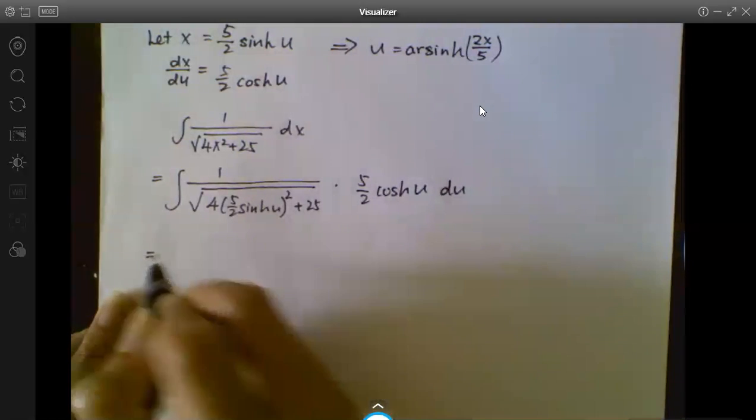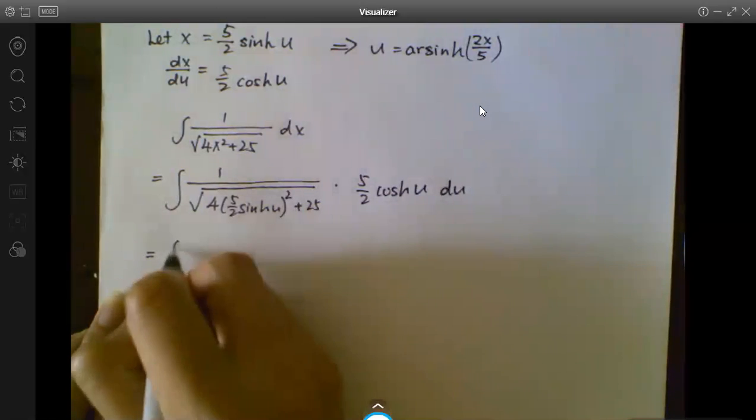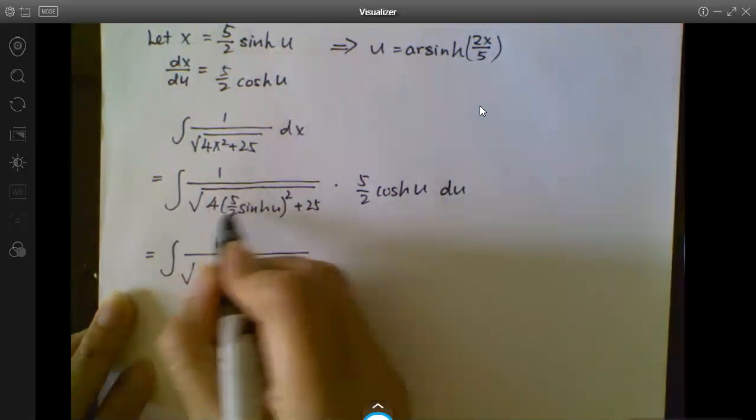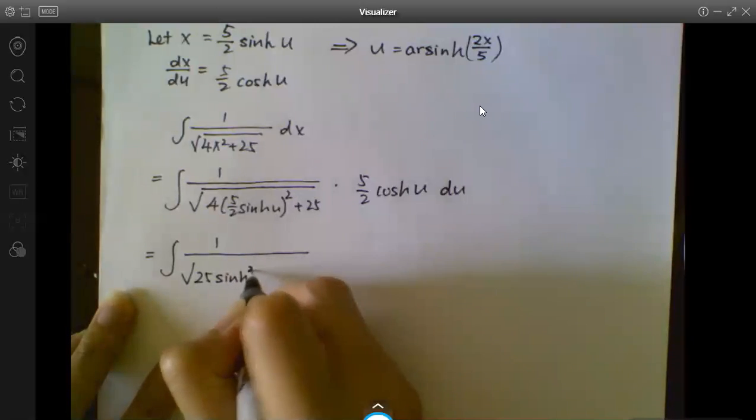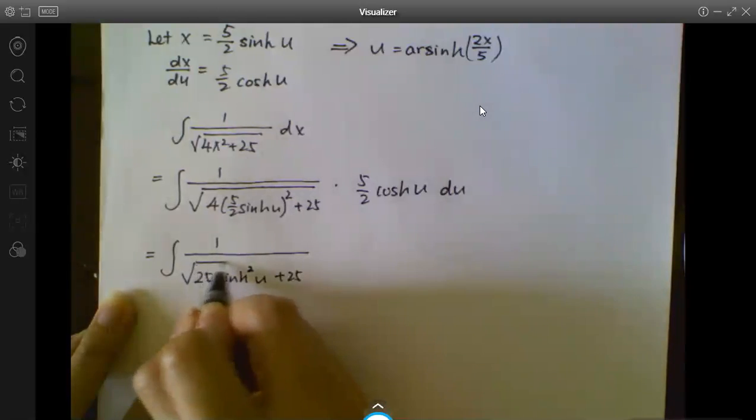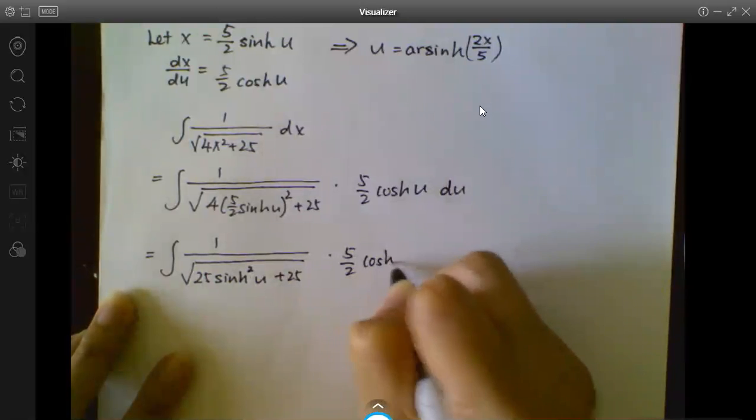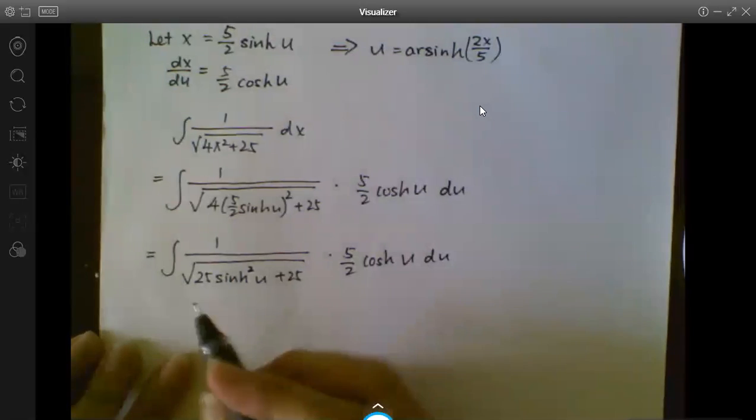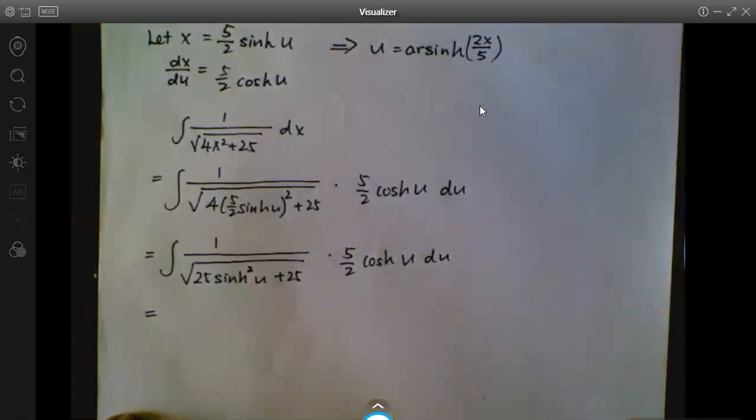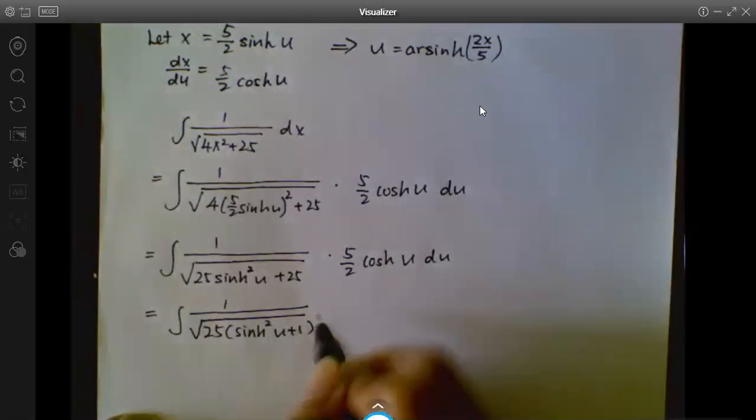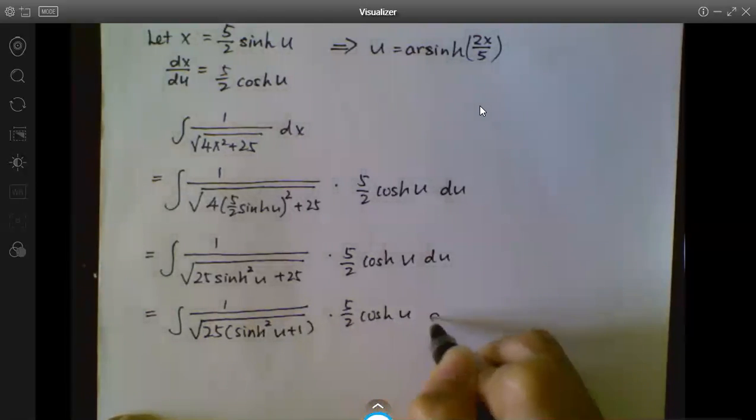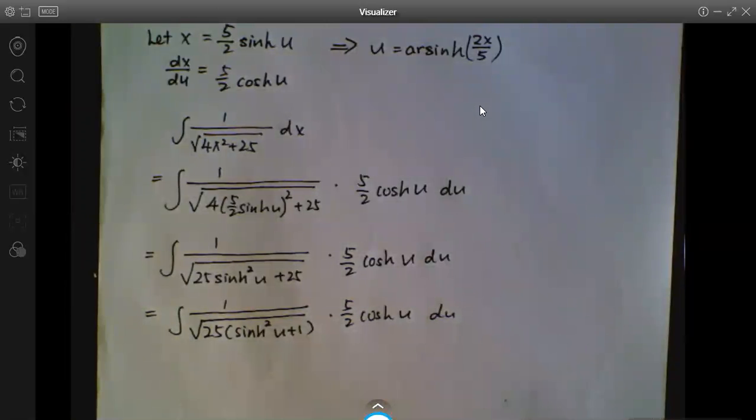Okay, now we simplify. You square 5/2, you get 25/4. Multiply by 4, you get 25. So we have square root of 25 sinh²(u) plus 25. You can take out 25.